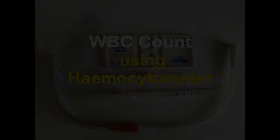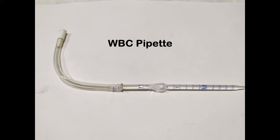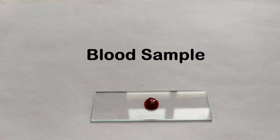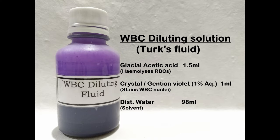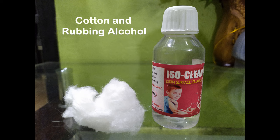For this experiment you will need the following: counting chamber, WBC pipette, blood sample either from a pricked finger or from a sample drawn from the vein and stored in a tube containing an anticoagulant, WBC diluting solution, compound light microscope, cotton and rubbing alcohol.